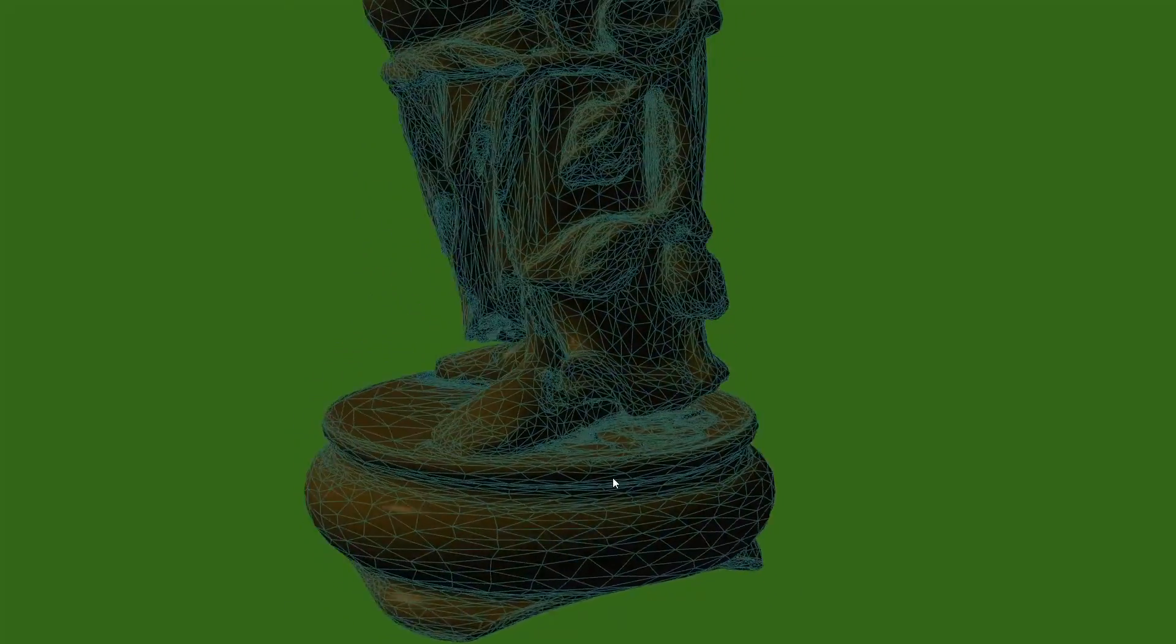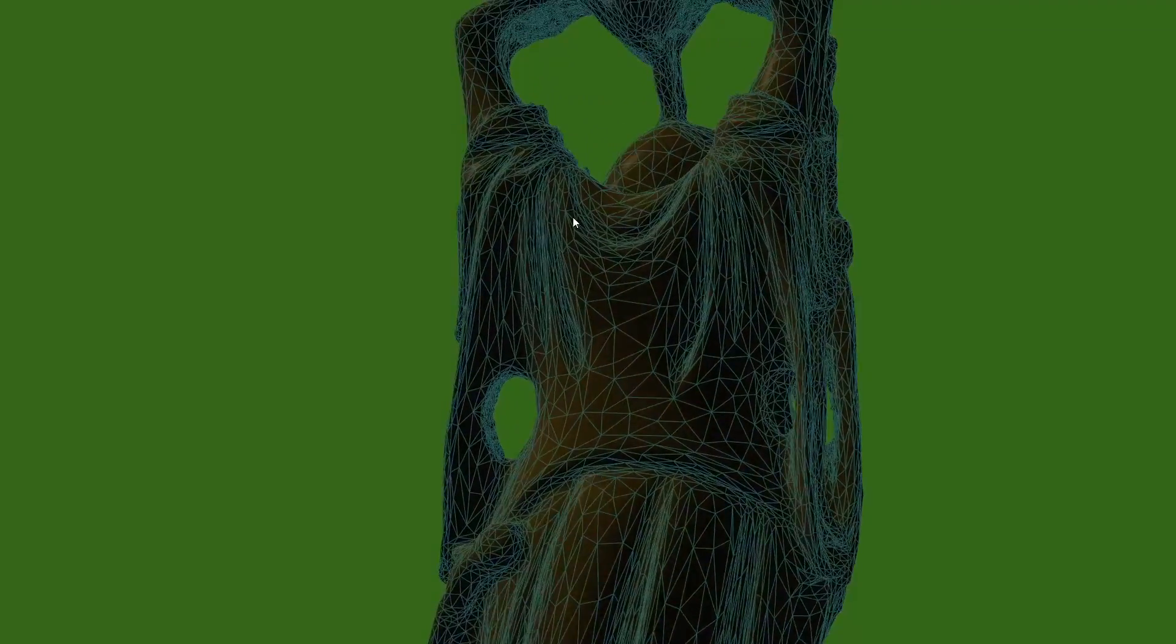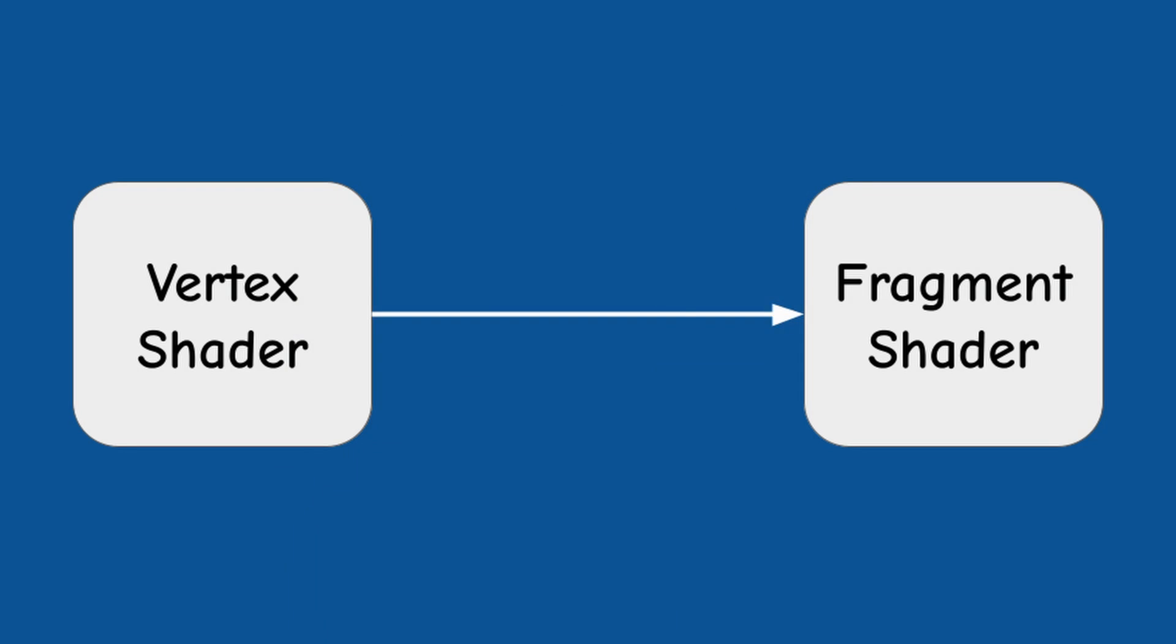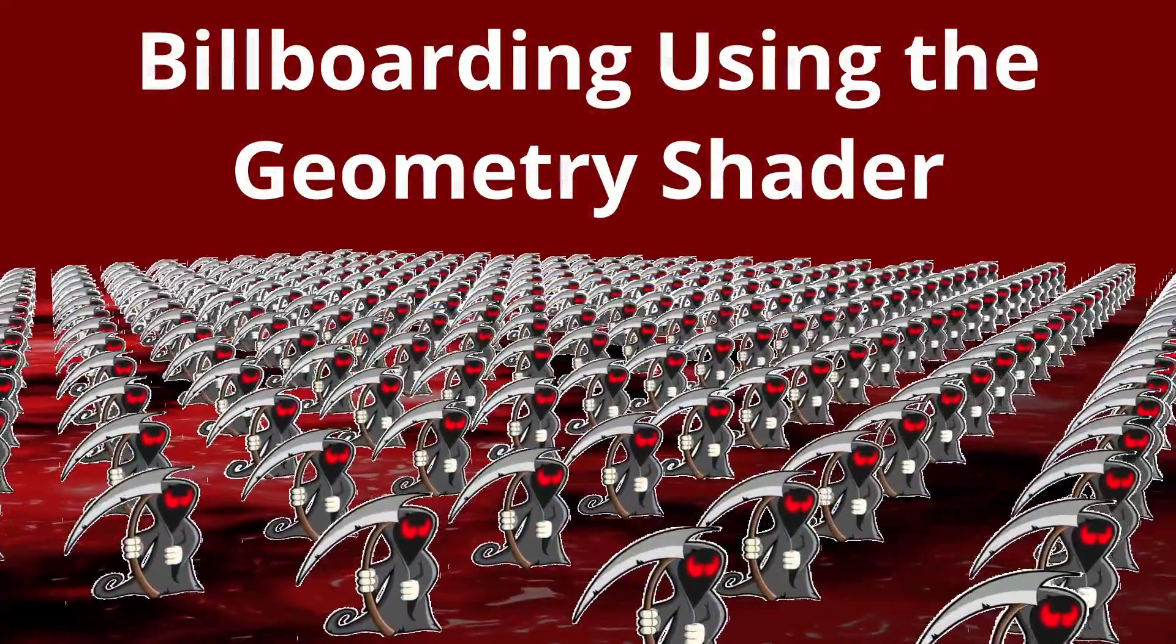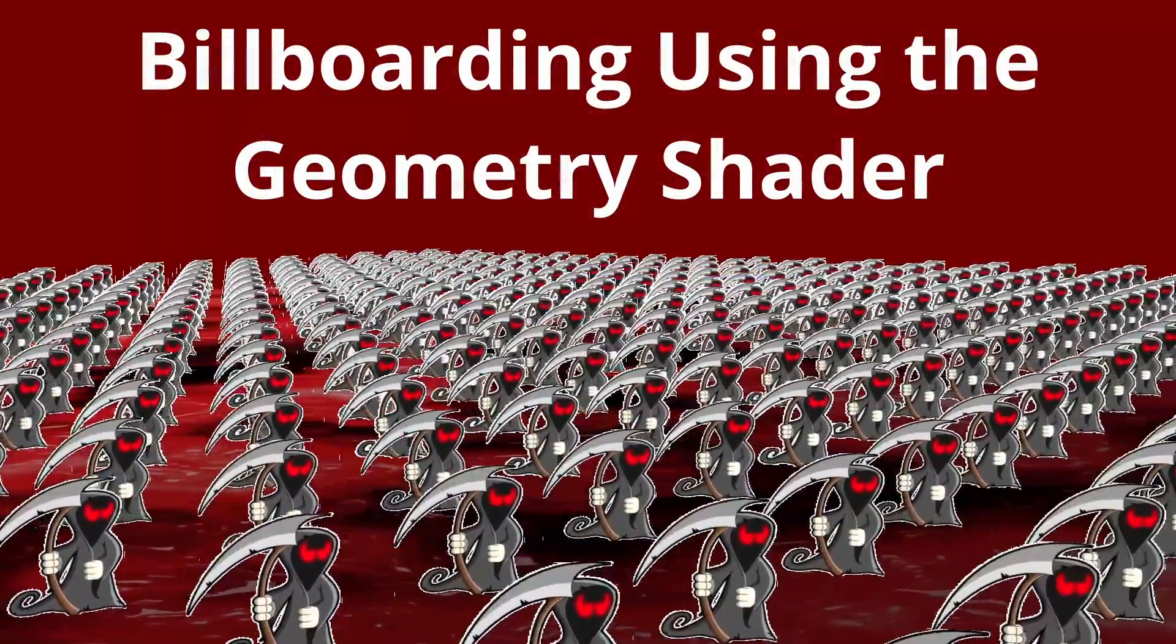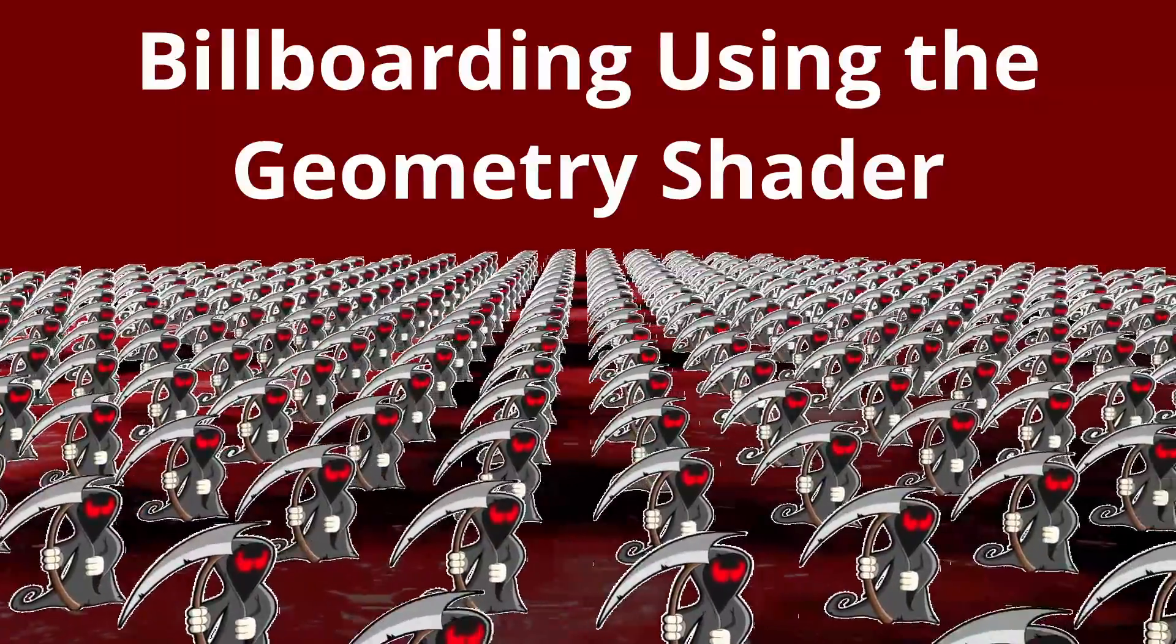This is a good example for using the GS to add new information to the pipeline without any changes to the geometry. Since this is the second video on using the GS, I will assume that you are familiar with the basics. If this is your first encounter with the GS, I highly recommend watching my previous video on this topic.